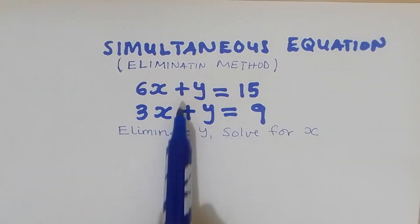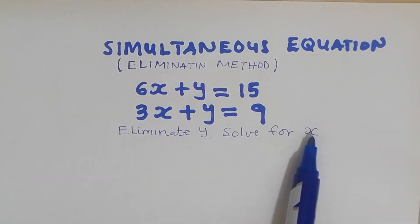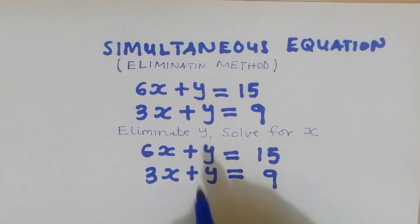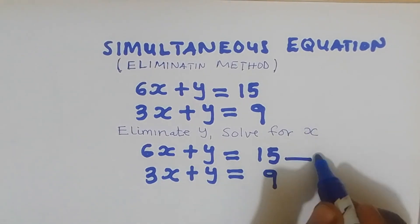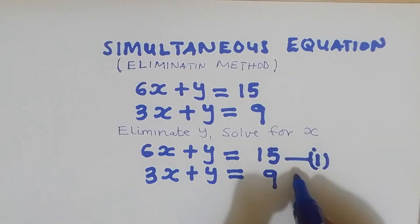In these two equations first, I'm going to eliminate y and solve for x. 6x plus y is equal to 15, I'll call this equation number 1. And 3x plus y is equal to 9, I'll call this equation number 2.